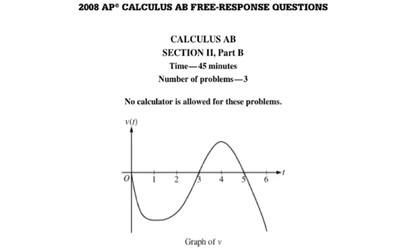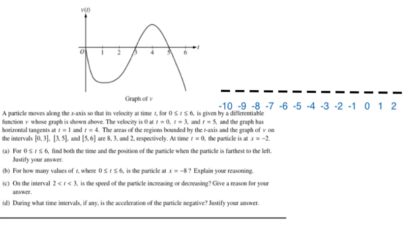This video is about the 2008 free response question problem number four involving particle motion. One good thing to start with is to identify what the particle is actually doing in relation to the graph of its velocity. I've set up a basic number line to represent the position of the particle and model what's happening based on the graph. The problem tells us that the position of the particle is at negative two at time zero.